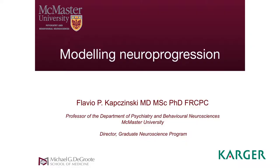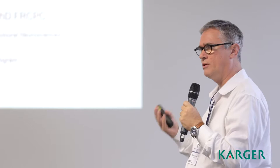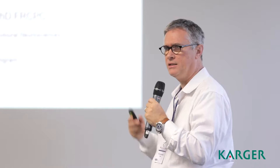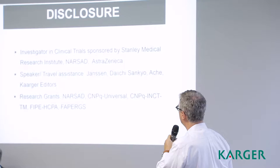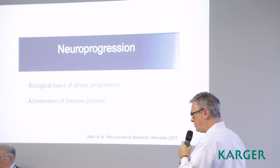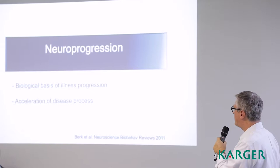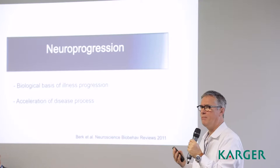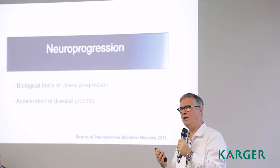We are going to talk a little bit about ways to model neuro progression because, of course, we want to know what it means clinically. But ideally, we would like to have some cell model or animal model that would be more consistent with the constructs of neuro progression. So I'm going to show a few of the experiments we did and we can discuss further on this topic. Those are my conflicts of interest. To kind of set the stage, neuro progression — when Michael created the term, we were thinking of neuro progression as the biological basis of illness progression. And in the beginning, the focus was bipolar.